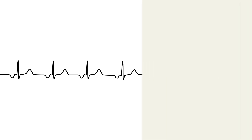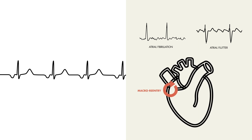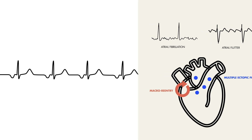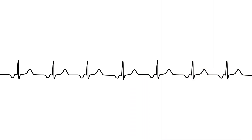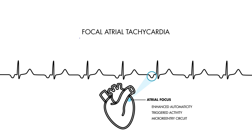It also differs from other atrial tachyarrhythmias, like atrial flutter or atrial fibrillation, which are typically macro-reentrant atrial arrhythmias originating from multiple sites or larger circuits. In the case of focal atrial tachycardias, they are often the result of enhanced automaticity, triggered activity, or a micro-reentry circuit from a single atrial location, hence the name focal atrial tachycardia.